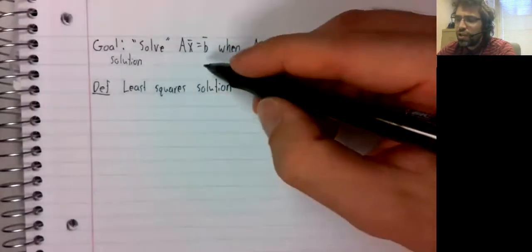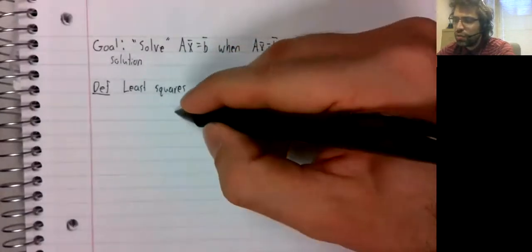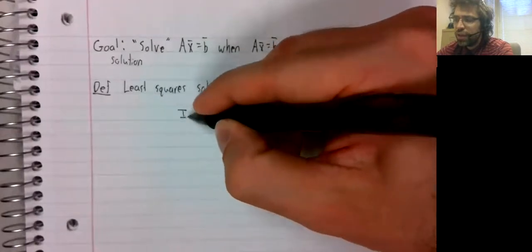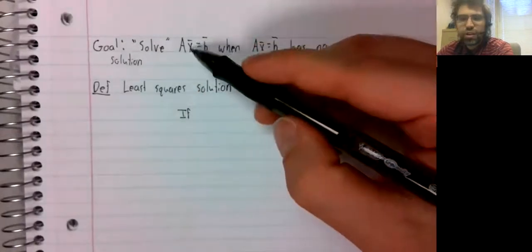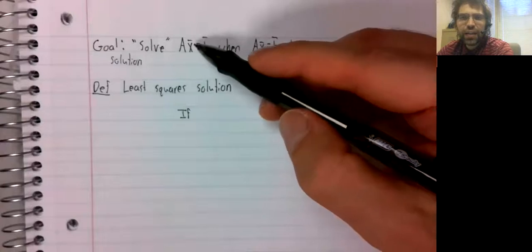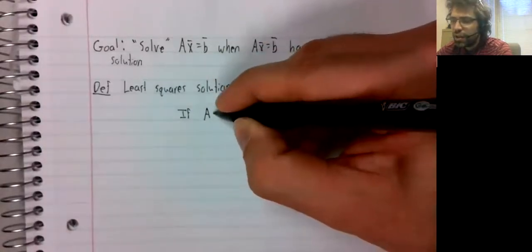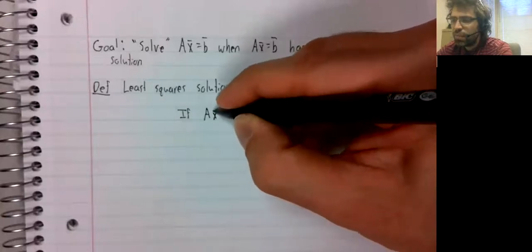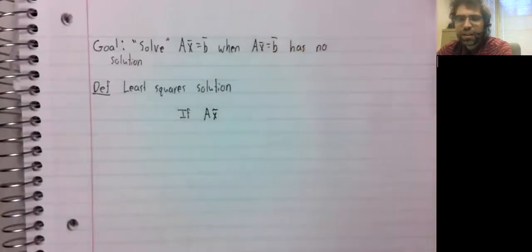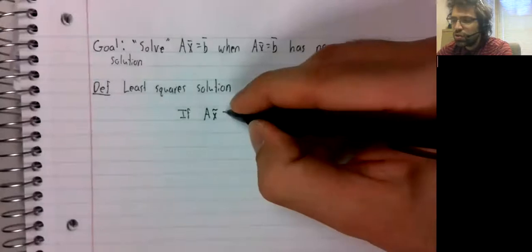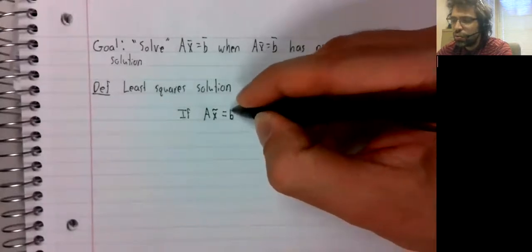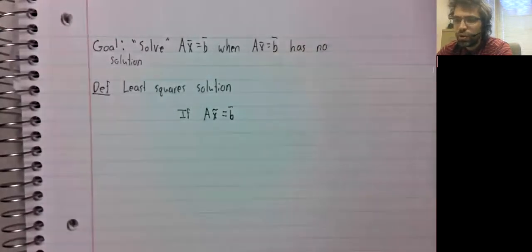Our motivation here is if this thing had a solution. If there were some x tilde such that A x tilde equaled b,